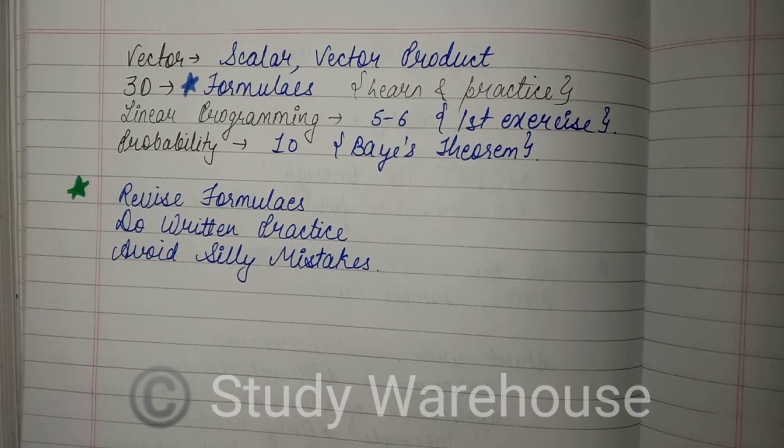Vectors is a very easy chapter - you just have to calculate scalar and vector product, which you would have practiced in class 11. After that, 3D is a bit tough because there are many formulas. You need to learn the formulas and practice the questions two to three times because they are a bit confusing.